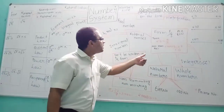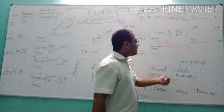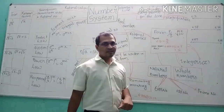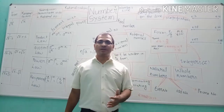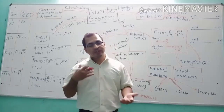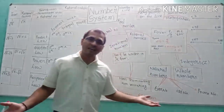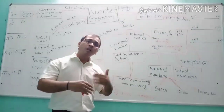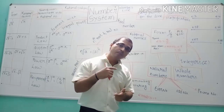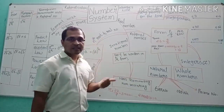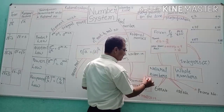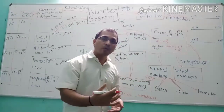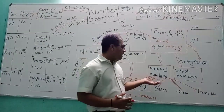Moving back to rational numbers, they are divided into three parts. First is natural numbers. All the positive counting numbers are known as natural numbers — for example, 1, 2, 3, 4, 5, 6, and so on up to whatever number you can count.